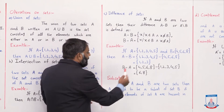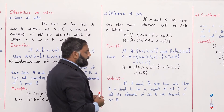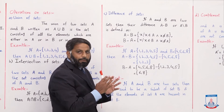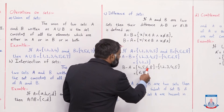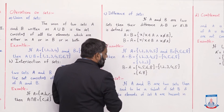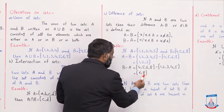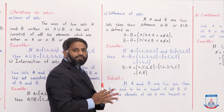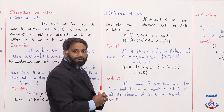اسی طرح B − A find کریں گے — پہلے B لکھیں گے minus set A۔ Set B کے وہ elements جو set A میں نہیں ہیں: 6 یہاں نہیں ہے تو 6 آگیا، پھر 8 — next set میں وہ نہیں ہے تو 8 آگیا۔ تو B − A = {6, 8}.